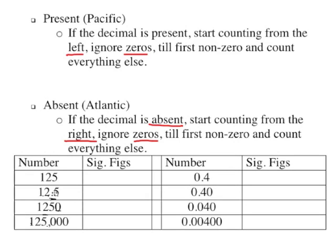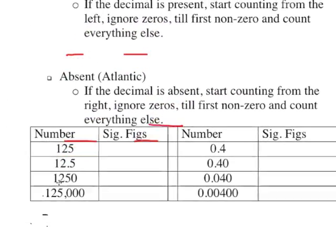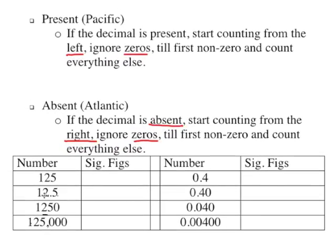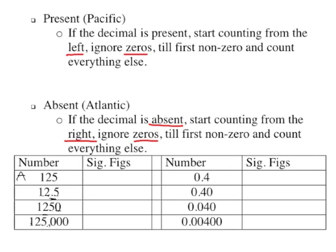In all these, the decimal is present. We do have the decimal present. The decimal is absent, so that means we're going to start from the right and simply count — there are three significant figures. These are easy when there are no zeros. Second one, 12.5, the decimal is present, so we start from the left and count one, two, three. There are three significant figures on this one.